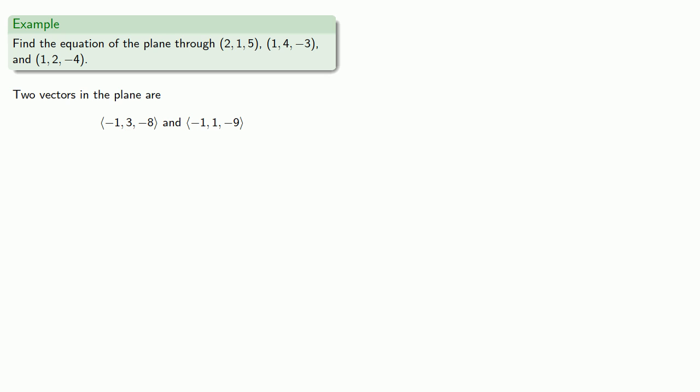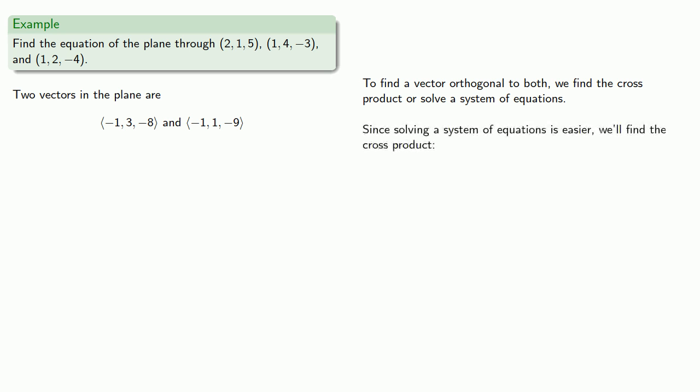So now we want to find a normal vector, because that's the one thing we can rely on is that the normal vector will be orthogonal to all vectors in the plane. To find a vector orthogonal to both, we can find the cross product or solve a system of equations. Since solving a system of equations is easier, we'll find the cross product. That's because you should be able to set up and solve the system of equations on your own without any additional help.